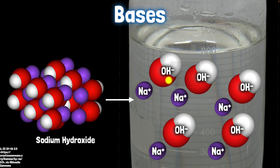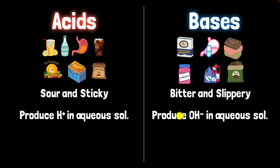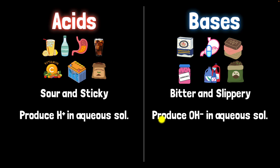So we have our definitions: acids are substances that produce positively charged hydrogen atoms in aqueous solutions, and bases are substances that produce negatively charged OH- molecules in aqueous solutions. But remember, these are not complete definitions yet — for complete definitions, we still have to talk about pH, which we will do in the next video. Since both acids and bases produce electrically charged atoms and molecules, they are electrolytes in aqueous solutions, and therefore they both conduct electricity.